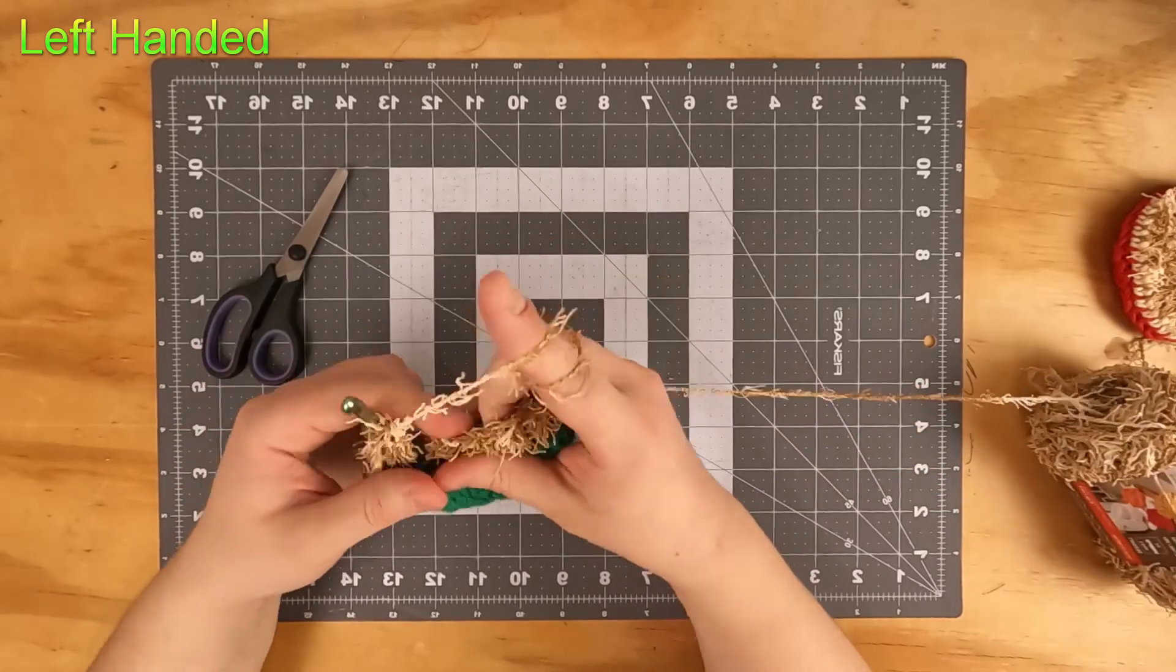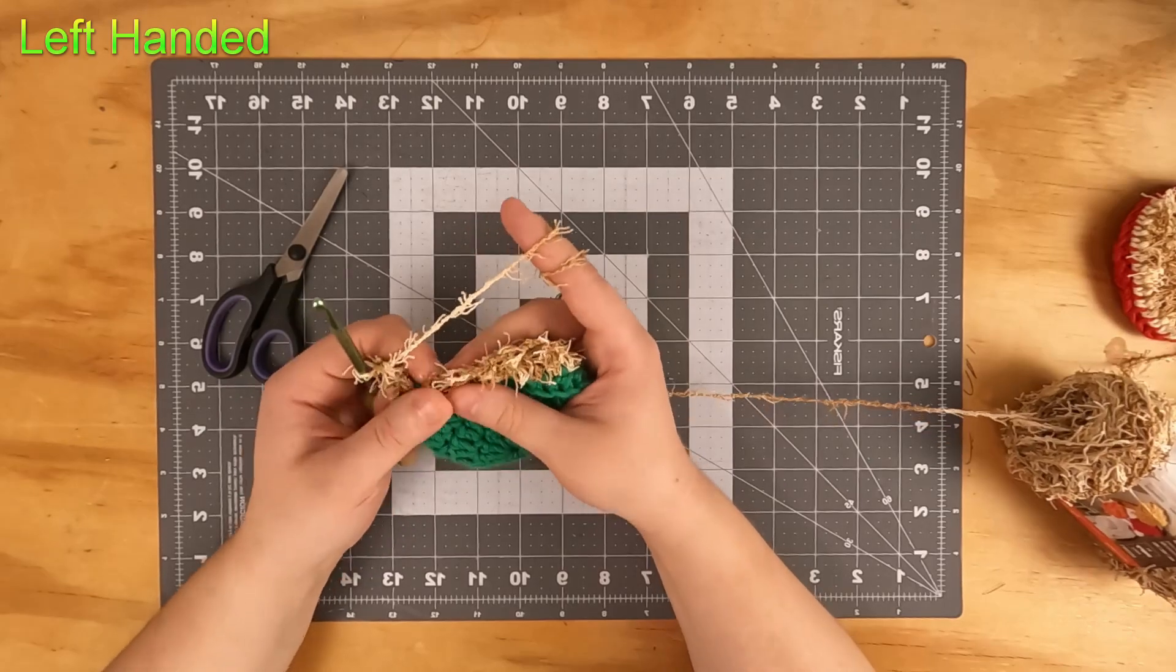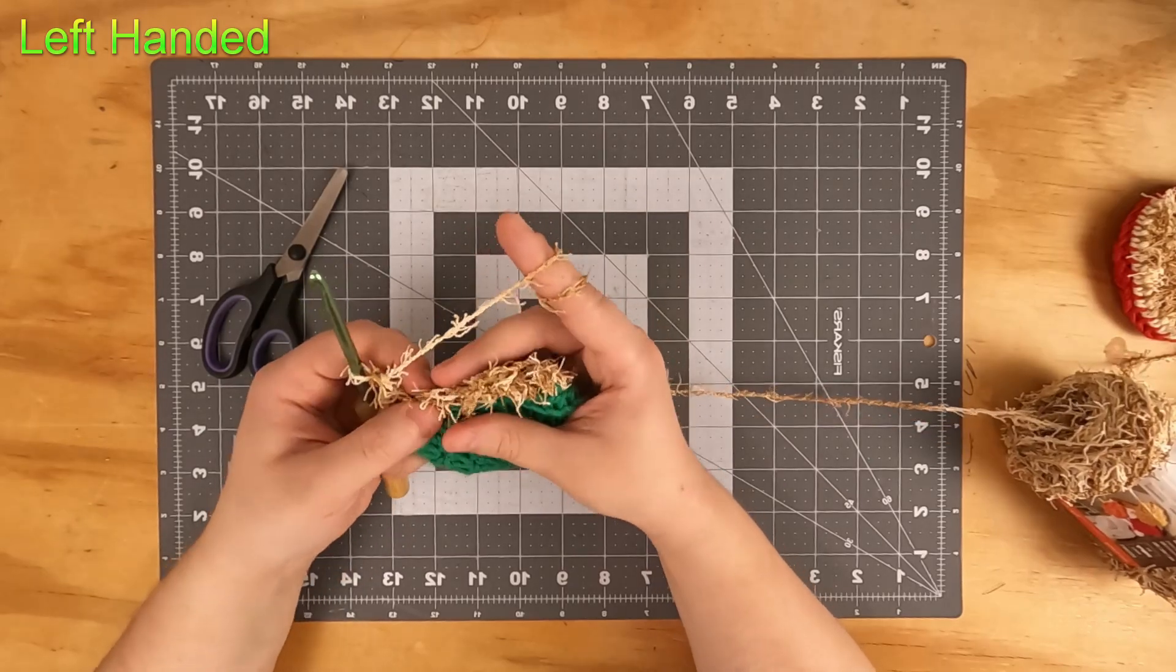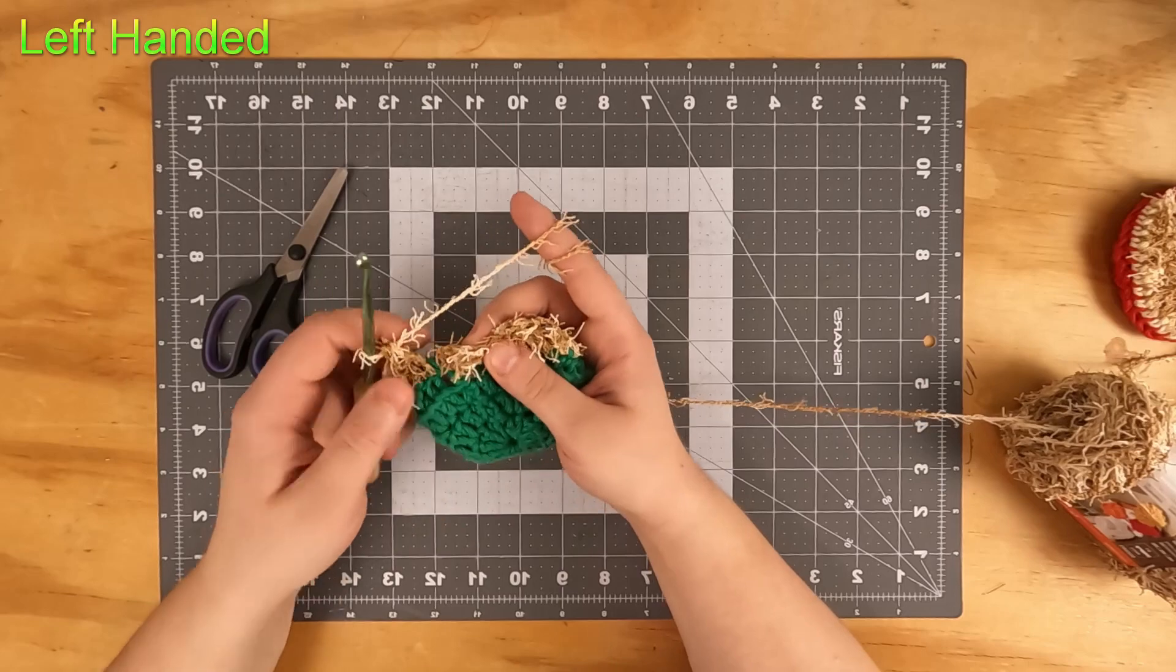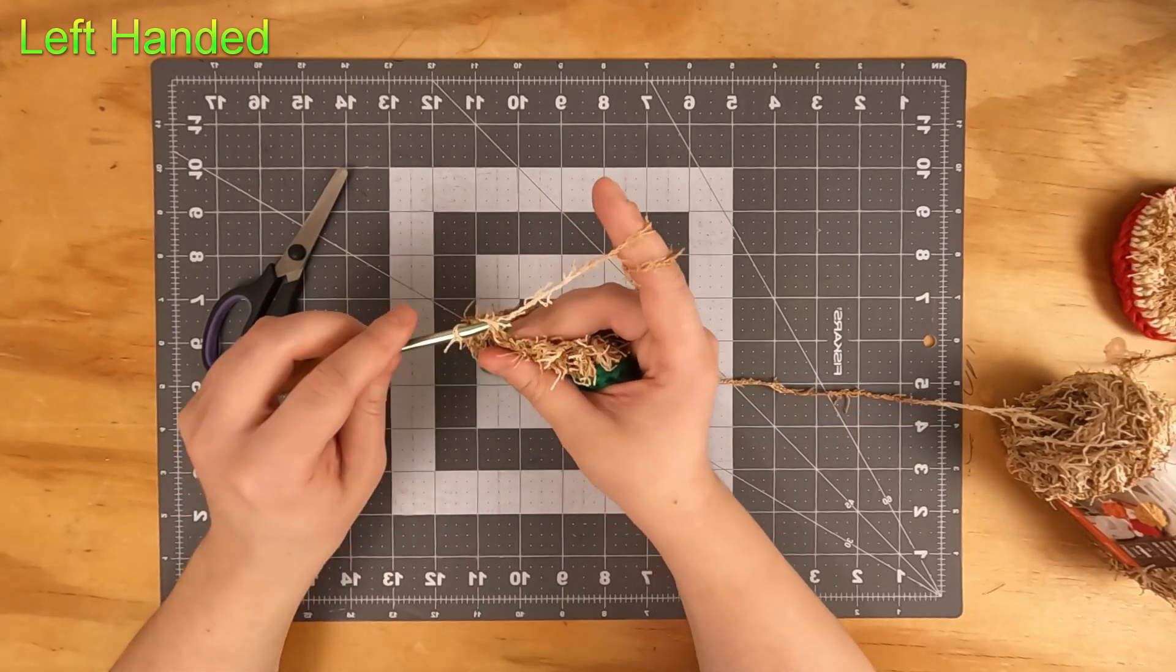Once you get to the end of that round, go ahead and slip stitch to the first stitch there. It's a little bit harder to see your stitches with the scrubby yarn, so just try and find a V-shape up here right after your chains and you should be in the right spot.